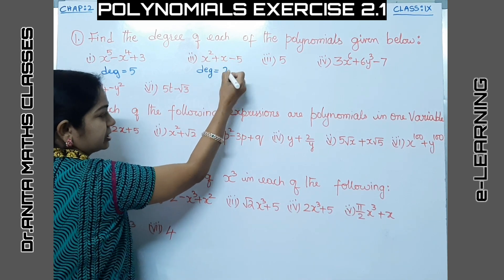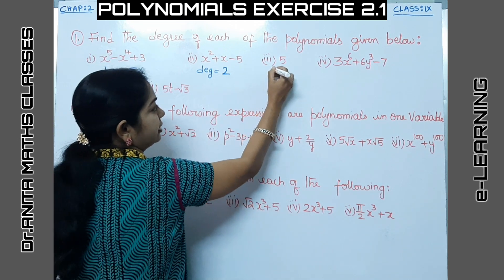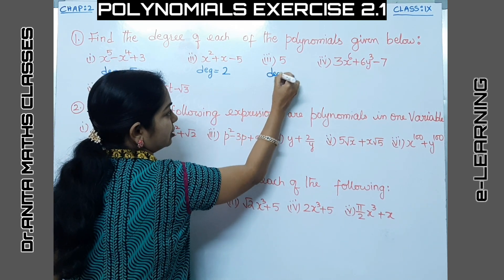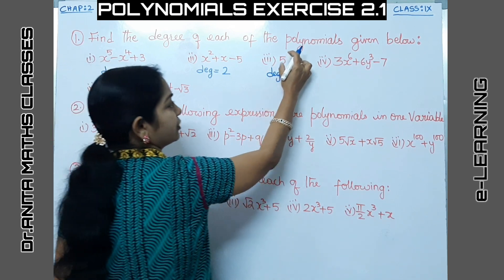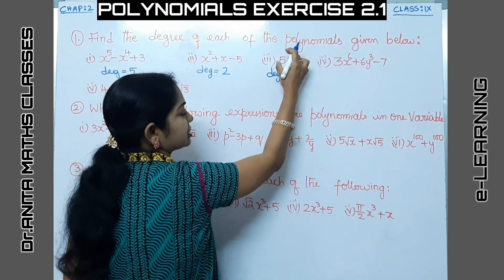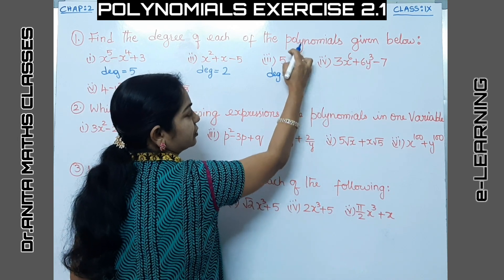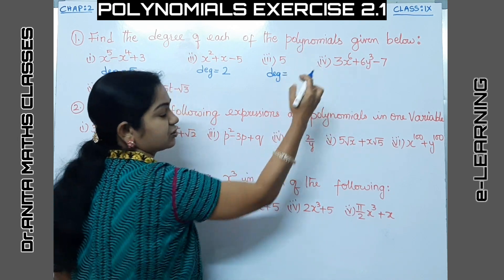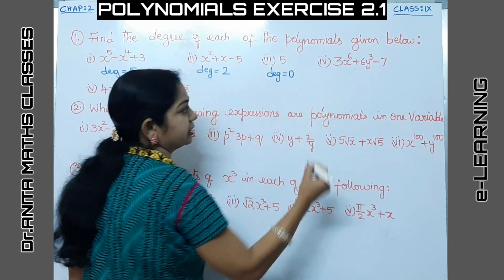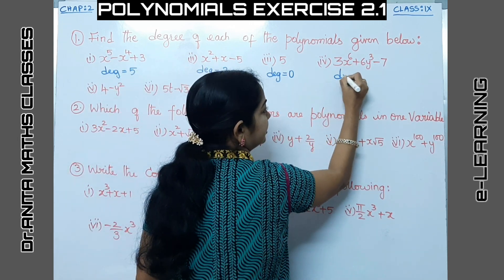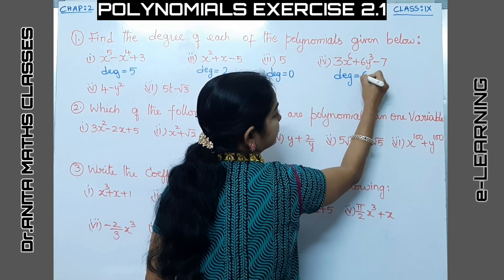For a constant polynomial, we simply have a constant — this is called a constant polynomial. We can write it as x to the power of 0, so the degree is 0. And for another polynomial here, the degree is 6 because that is the highest power of the variable.